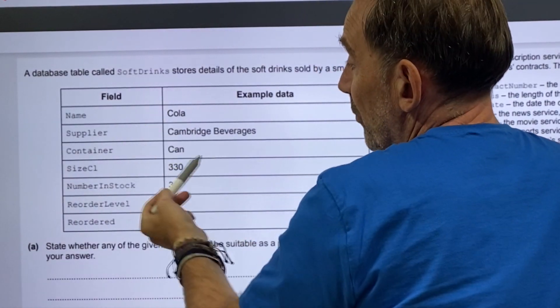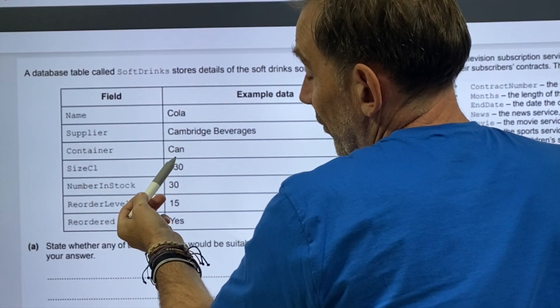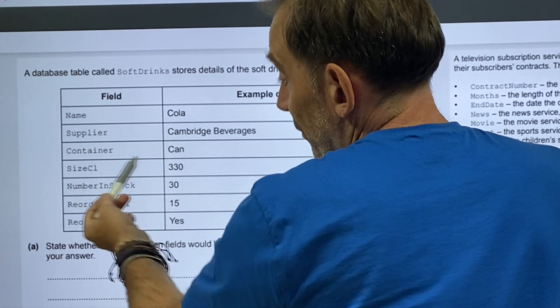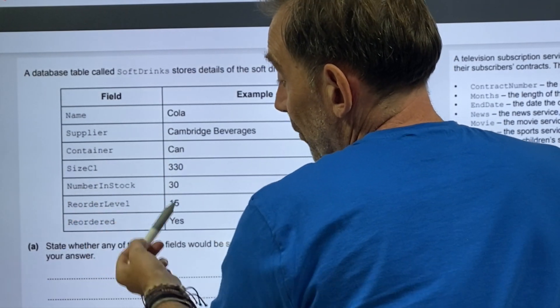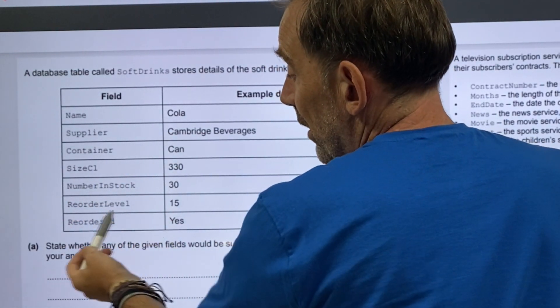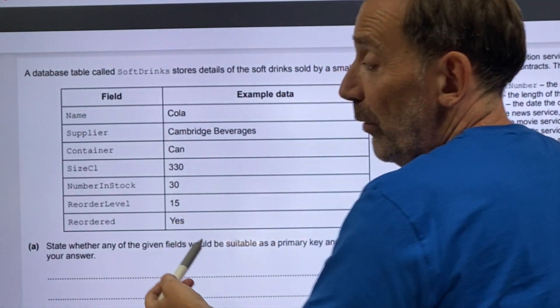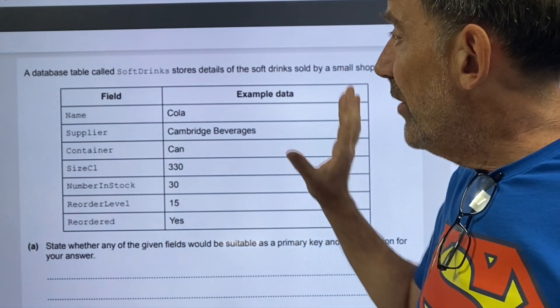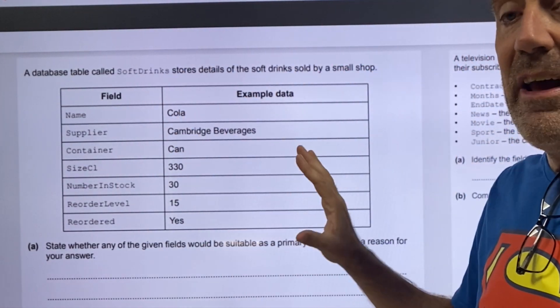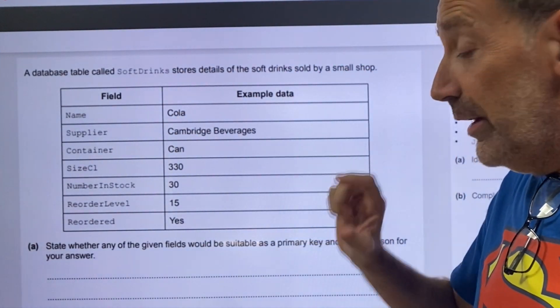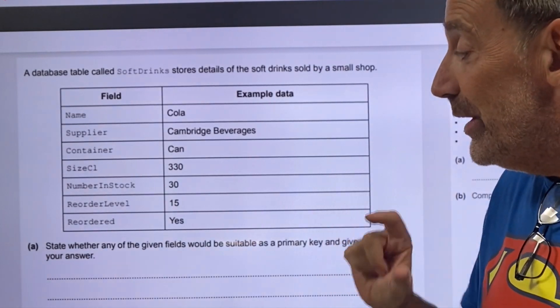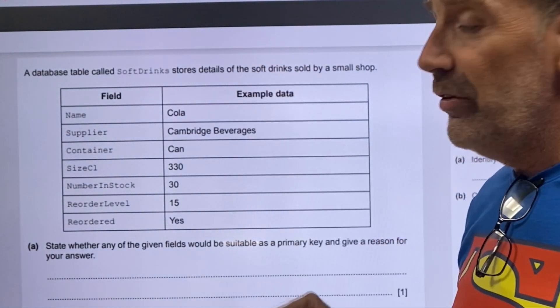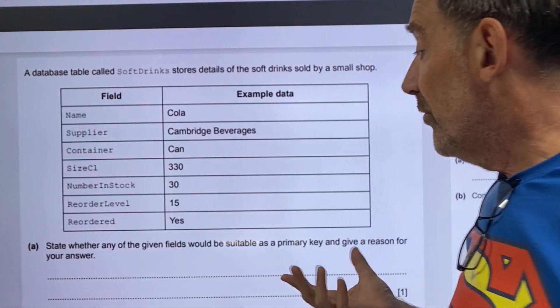Supplier, again, it might not just be one supplier. Container could be a can or a bottle, different size bottles. Obviously number fields could change over time, and reordering is a boolean, whether it's yes or no. None of these contain any kind of unique identifier. That's a keyword, unique, unique identifier. None of these could be deemed unique.